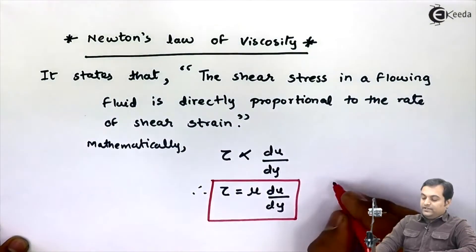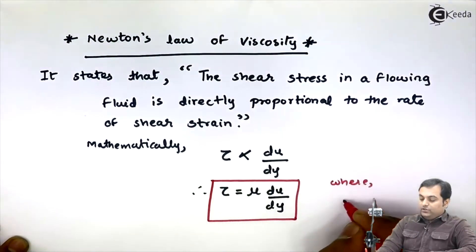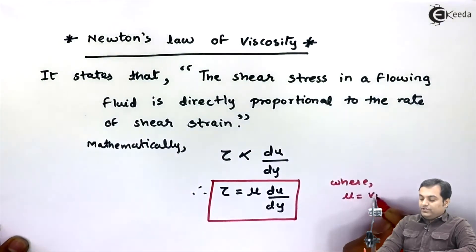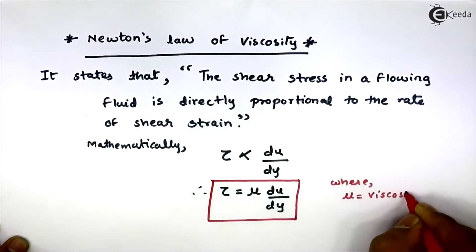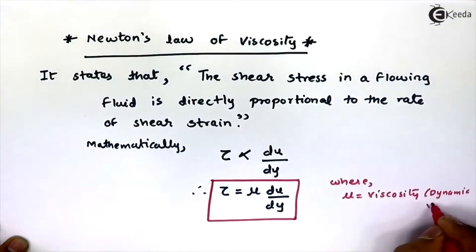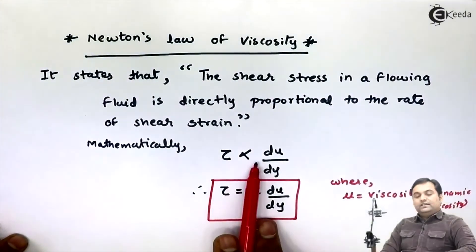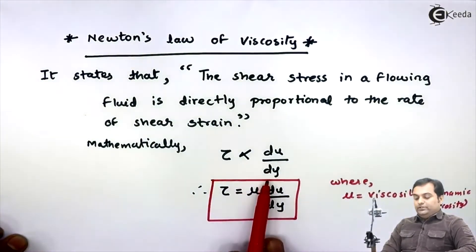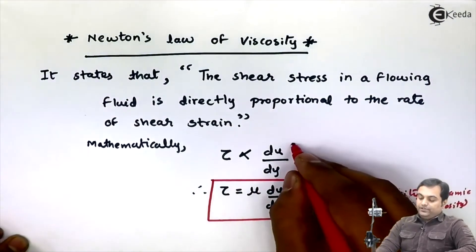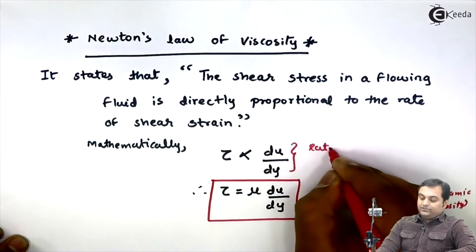Here, mu is called viscosity, or it is called dynamic viscosity. The term du by dy is called the rate of shear strain.